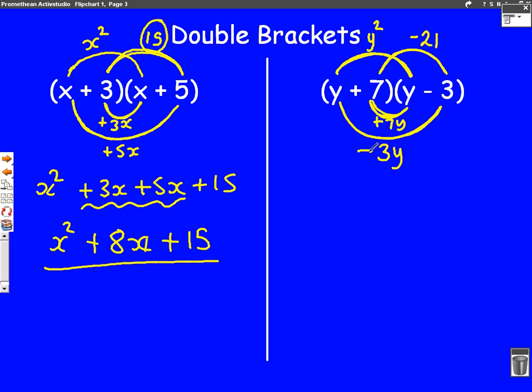And then we write them down for our first mark. So always start with the squared. So y squared goes at the first. Then it's plus 7y minus 3y. And the number always goes last. So minus 21 goes at the end.